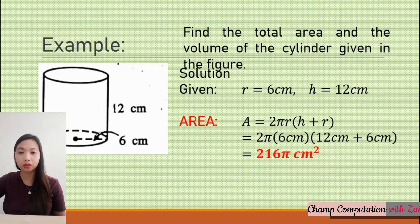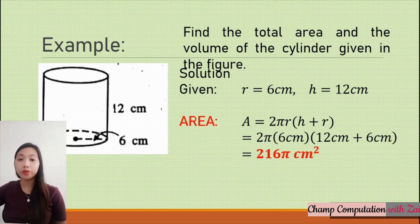For the total area, we have the formula 2πr quantity h plus r. We're going to substitute the given values. So we have 2π multiplied by 6 centimeters, the quantity 12 centimeters plus 6 centimeters. When we compute that, we have a total area of 216π square centimeters.